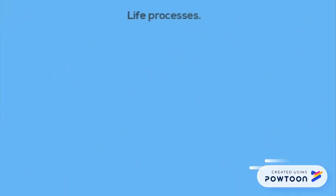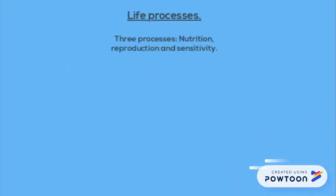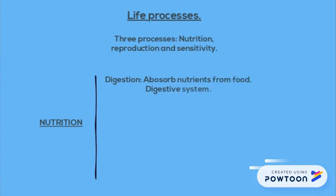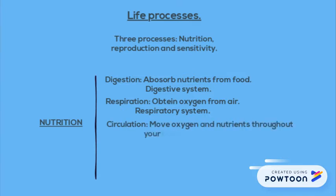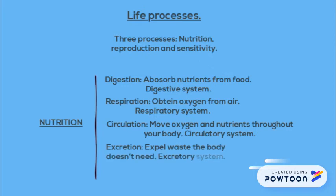There are three life processes: nutrition, reproduction and sensitivity. For nutrition, you will find digestion to absorb nutrients from food, respiration to obtain oxygen, circulation to move oxygen and nutrients throughout your body, and excretion to expel waste the body doesn't need.